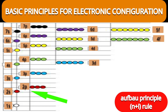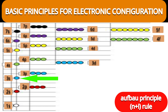For 2p: n = 2, l = 1, so 2 + 1 = 3. Since 3 is more than 2, the energy of 2p is higher than that of 2s. For 3s: 3 + 0 = 3. Both 2p and 3s give the value 3. The rule says: if the n plus l result is the same, the energy level with the lower principal quantum number will be lower in energy. So 2p belongs to the second shell, and therefore energy of 2p is lower than 3s.